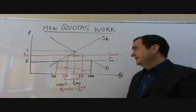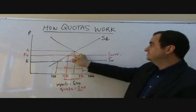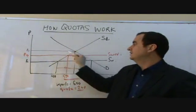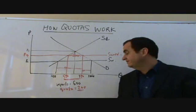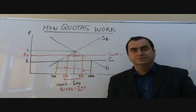Of course, if the quota had been set to zero, then price would have to go all the way up to here, to P1. And there would be no imports allowed. And not allowing any imports in, having a quota set to zero, is called an embargo.